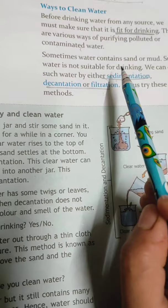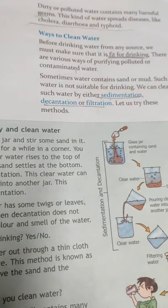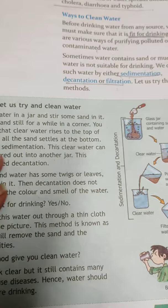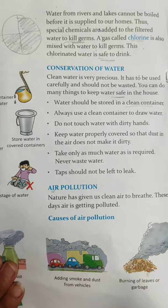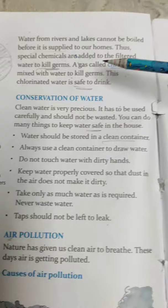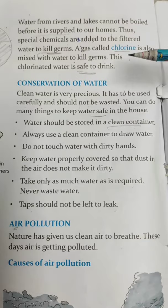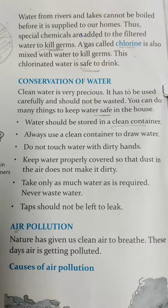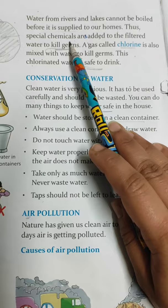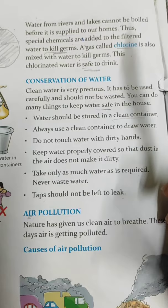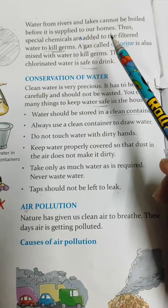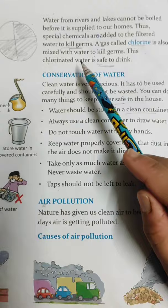These terms you will study in higher classes also; you just need to remember the process for making water fit for drinking. However, water from rivers and lakes cannot always be boiled — we cannot repeat this entire process for large quantities. So a special chemical, chlorine — either chlorine gas or chlorine tablets — is added to the water, which kills the germs to a large extent. This chlorinated water is then safe for drinking.